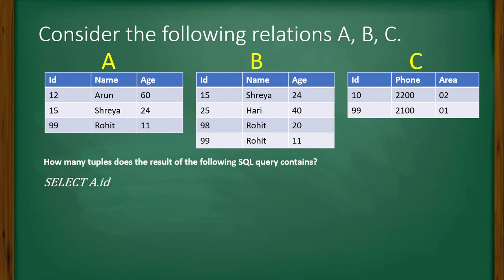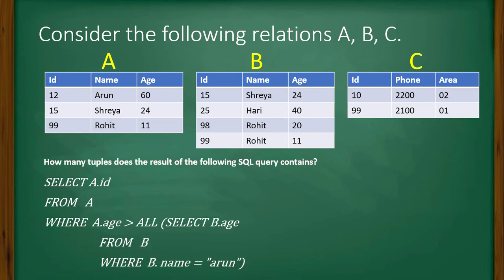The SQL query is SELECT A.id FROM A WHERE A.age greater than ALL (SELECT B.age FROM B WHERE B.name equal to 'arun'). Now it is a nested query, right? So let's see what the options are. Option A is 4, option B is 3, option C is 0, and option D is 1. Now let's see.